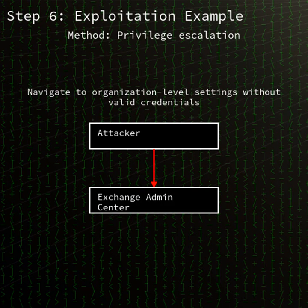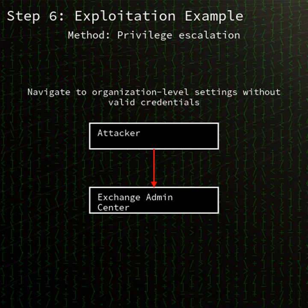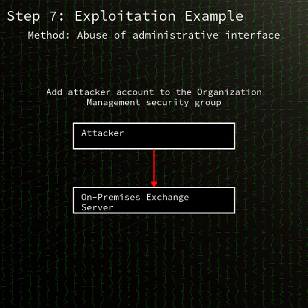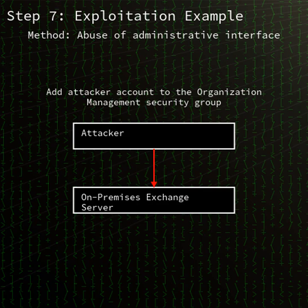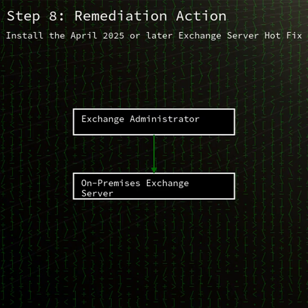On April 18, 2025, Microsoft rolled out security guidance and a non-security hotfix to improve hybrid Exchange deployments. Subsequent analysis revealed that portions of the guidance exposed an authentication vector. An attacker able to interact with the affected Exchange service could bypass expected authentication checks, move laterally, and escalate privileges within the hybrid environment. In response, CISA issued Emergency Directive 25-02 for federal civilian agencies and added CVE 2025-53786 to its Known Exploited Vulnerabilities catalogue.